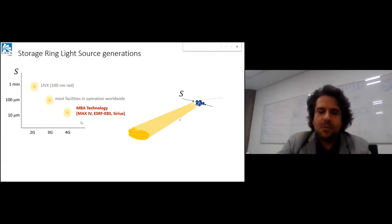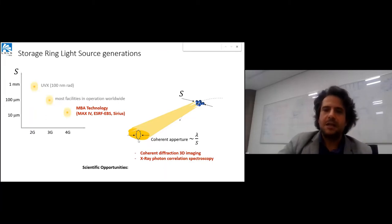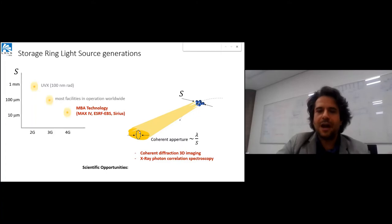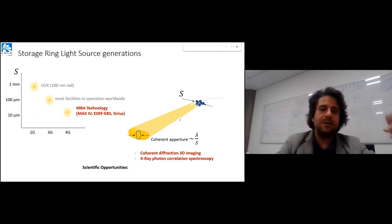Why is this important? First, if we want to extract coherent radiation, the amount of coherent fraction is inversely proportional to the size. If we want to use small lambda, we need a very small beam in the horizontal direction. The vertical is typically very small. This allows coherent diffraction imaging, x-ray photon correlation spectroscopy, and several other techniques needing coherent beams.